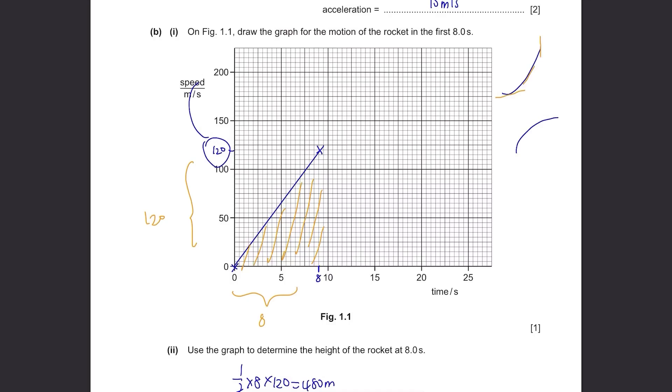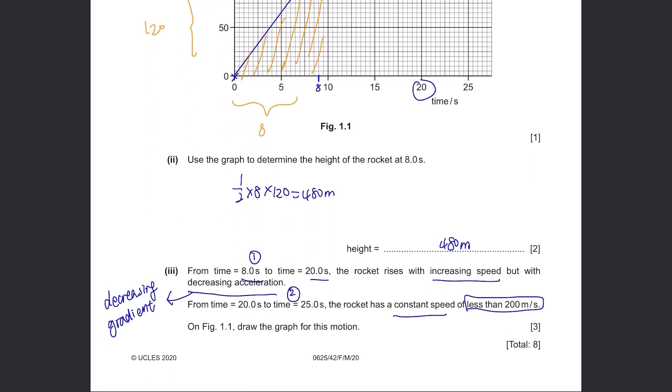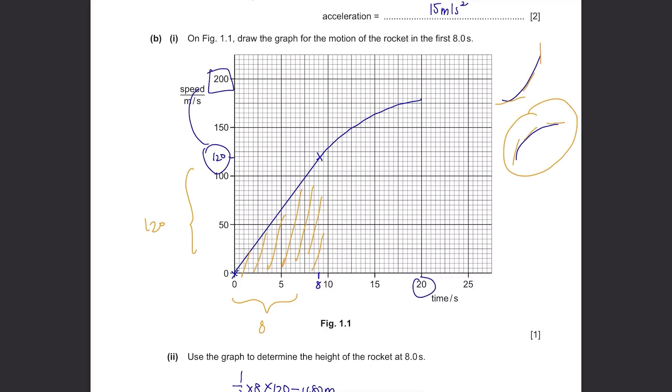For this, when it started from this, then this, then this, the lines are decreasing. So we have to draw this. Just until 20 seconds, then from 20 to 25 seconds, it has a constant speed. If it's a constant speed, it means that it's just going to be a straight horizontal line. And just one thing to be careful, it's less than 200 meters per second. And we have already drawn our graph to be less than 200, so it's perfect. Just draw a straight horizontal line from this.